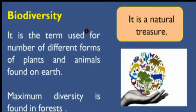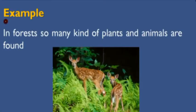Today we are discussing biodiversity. Biodiversity is the term used for the number of different forms of plants and animals found on the Earth. Maximum diversity is found in forests, meaning our forests have maximum diversity — different kinds of plants and animals are present in forests only.